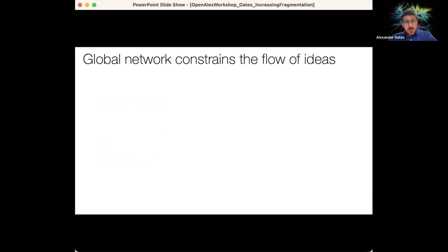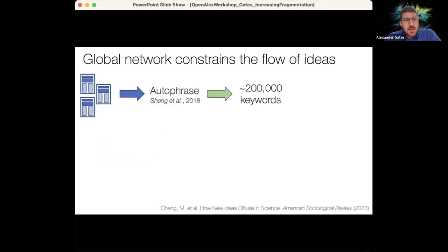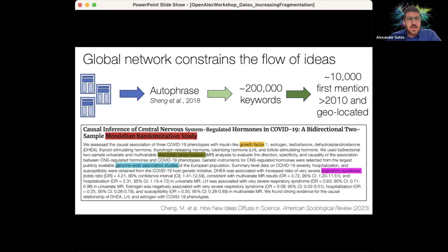And the next question that we were really interested in was how does this global network actually constrain the flow of ideas. And so in order to do that, what we do is we take all of the publications out of OpenAlex, we grab their abstracts and titles, and then we run a special keyword extraction mechanism on those things.